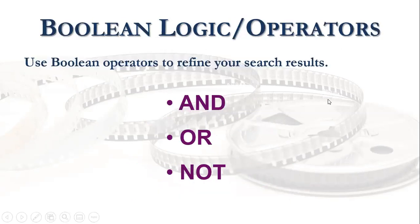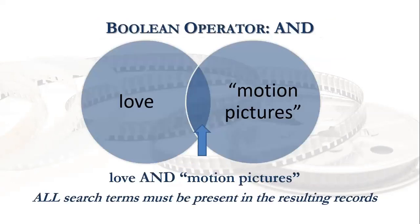You can use Boolean operators to refine your search. These are the three most popular but there are others available. You use the AND Boolean operator to narrow down your search results. So let's say you were looking for the theme of love in motion pictures — you could put in 'love AND motion pictures' and it would find results that have both those terms in them.